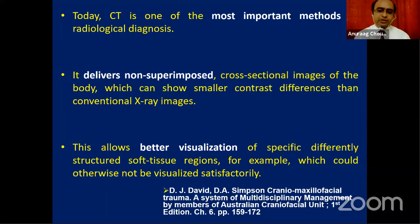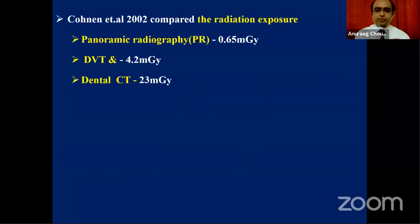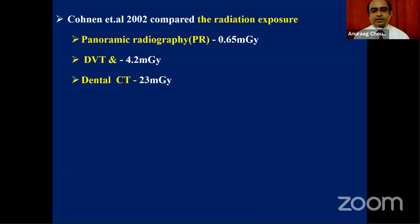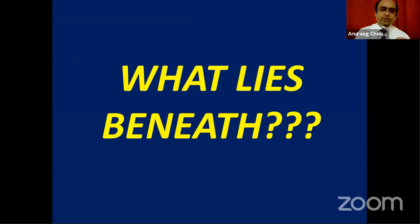CT scan is one of the most important methods in advanced radiological imaging. It delivers non-superimposed, clean images without superimposition of the particular pathology, and allows better visualization of specific structures — soft tissue, hard tissue, and intermediate tissue. Regarding radiation exposure, conventional radiography has the lowest dose; CBCT averages 4.2 milligrays; dental CT is 23 milligrays. In millisieverts, CT scan dose comes to almost 800 to 1000 microsieverts, while CBCT dose is approximately 50 percent of that.